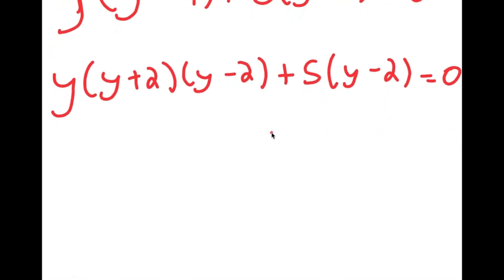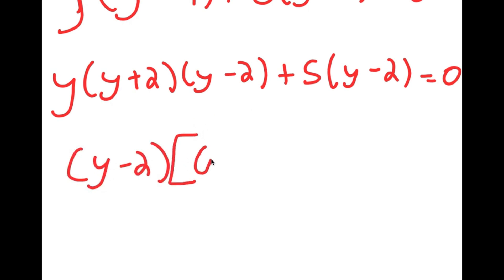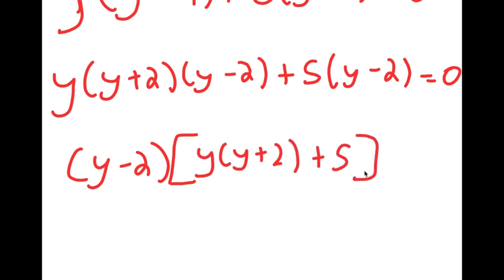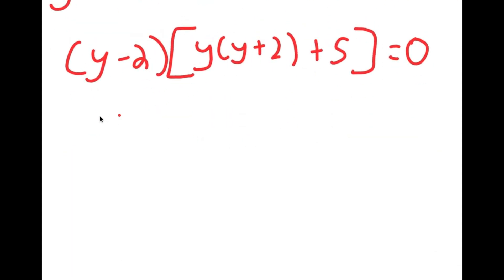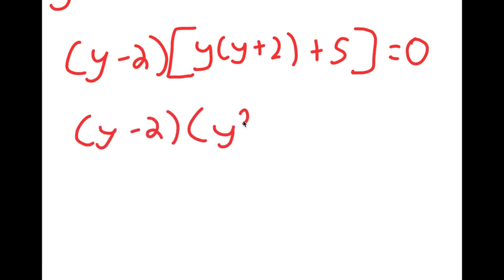Notice that the only common factor for all these terms is y minus 2. So I have y minus 2 times y times y plus 2 plus 5 is equal to 0. And now if I simplify this, I get y minus 2 times y squared plus 2y plus 5 is equal to 0.